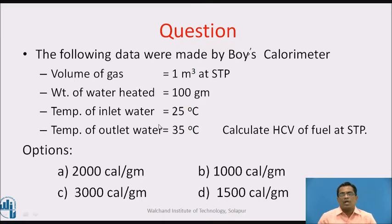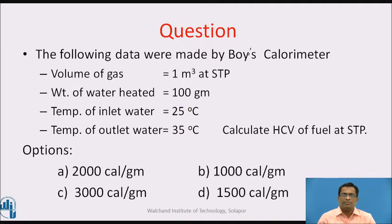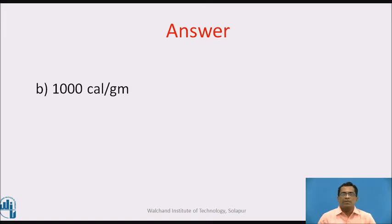Before solving more numericals, pause the video and answer this question. Following data were obtained from Boy's calorimeter experiment: volume of gas = 1 m³ at STP, weight of water heated = 100 g, temperature of inlet water = 25°C, temperature of outlet water = 35°C. Calculate HCV of fuel at STP. Options: a) 2000 cal/g, b) 1000 cal/g, c) 3000 cal/g, d) 1500 cal/g. The answer is b) 1000 cal/g.